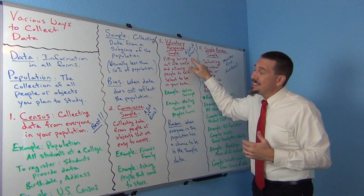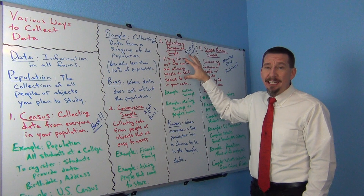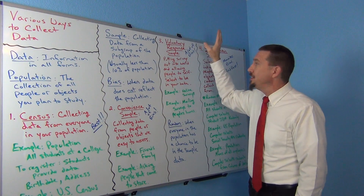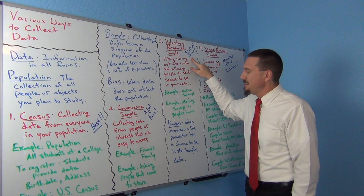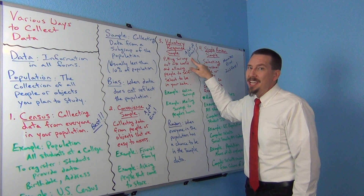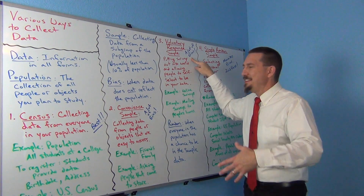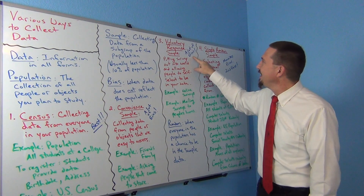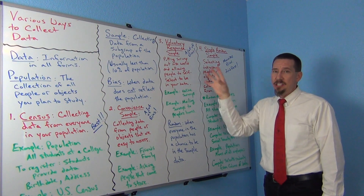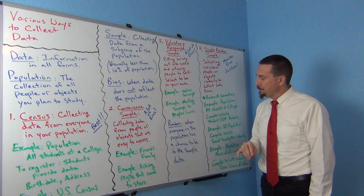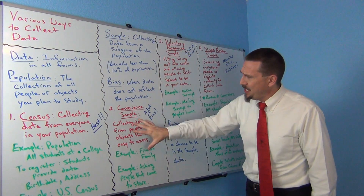Voluntary response samples tend to have a lot of bias. On the surface it seems like putting a survey out into the world would be a good idea, but it doesn't work very well. The data tends to reflect really upset people and really bored people, not the general population. We have to be careful about making decisions from voluntary response samples.